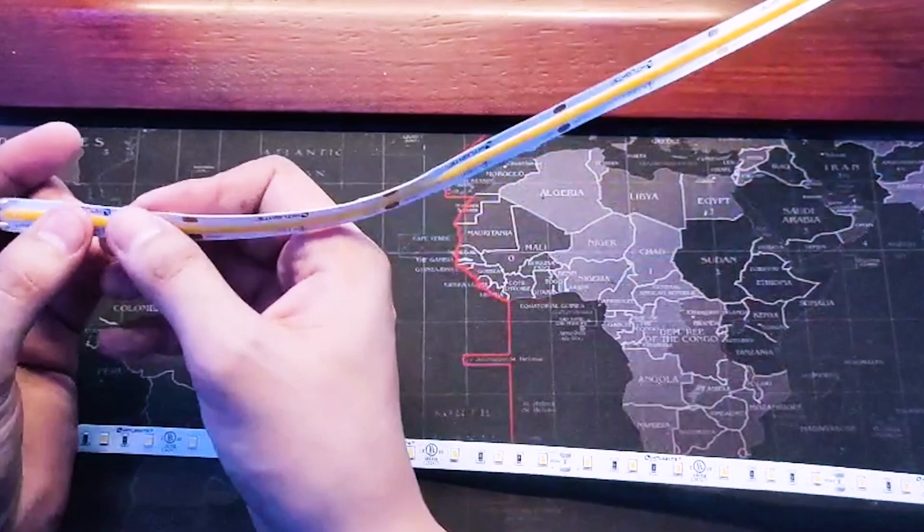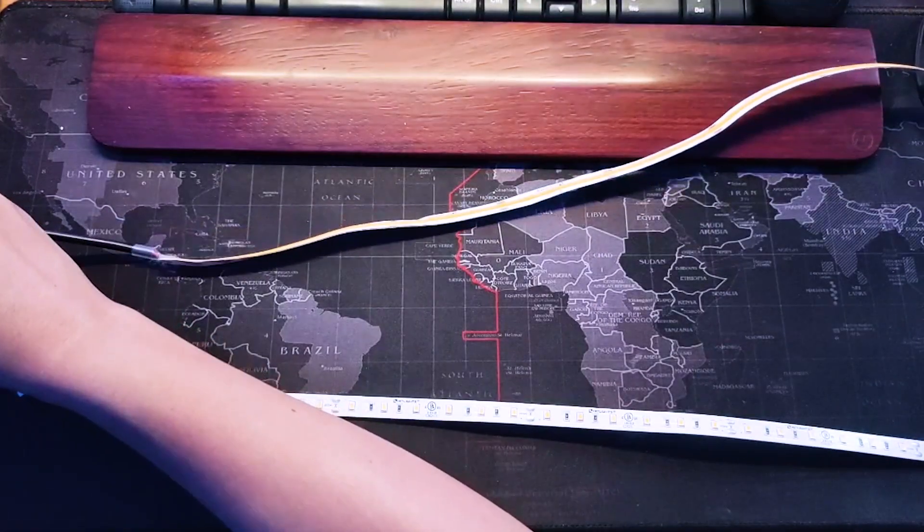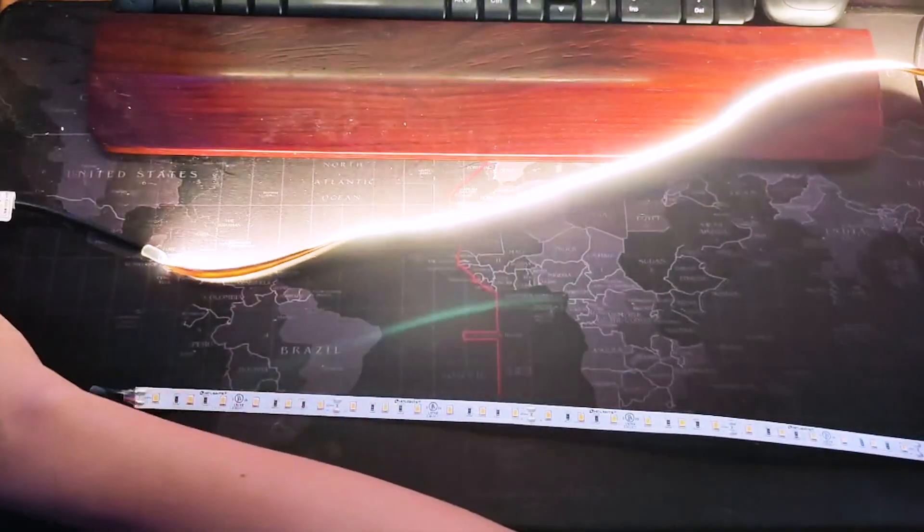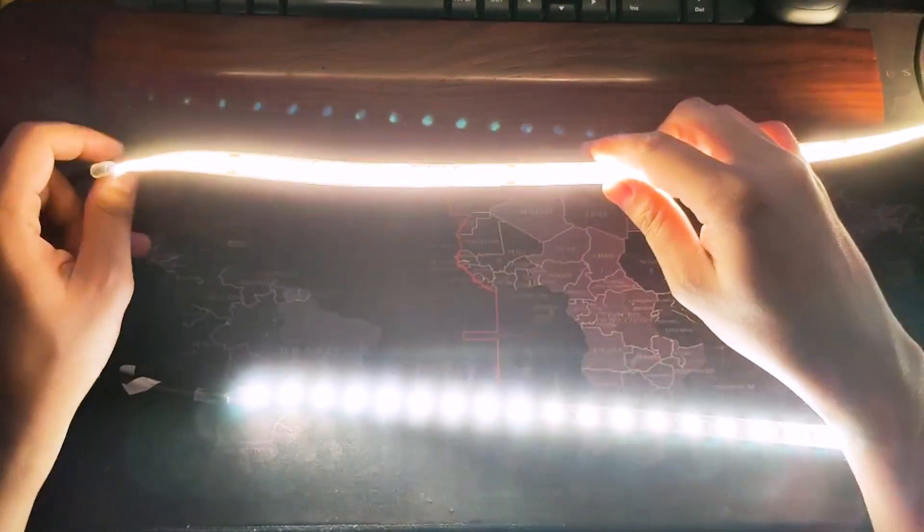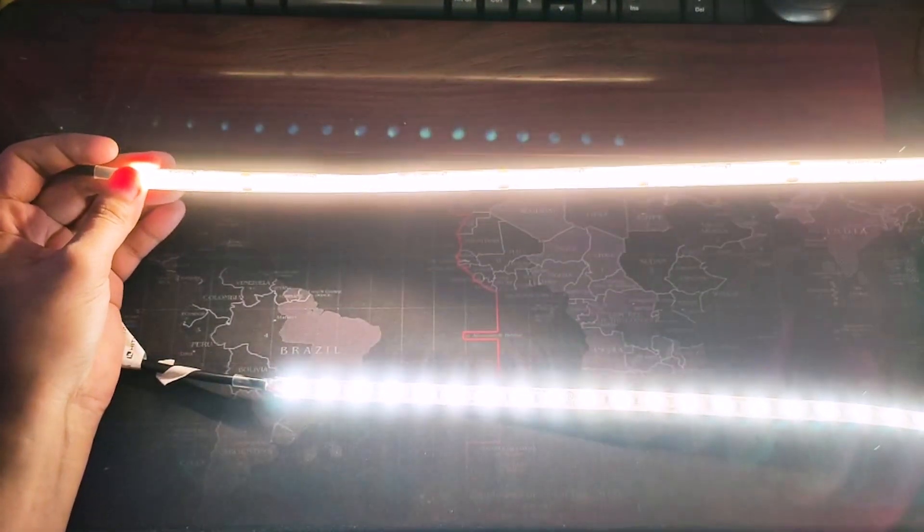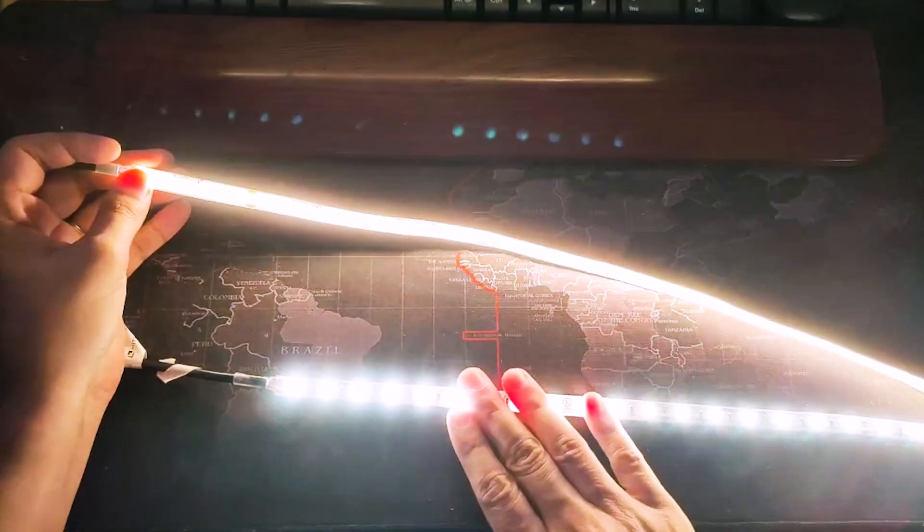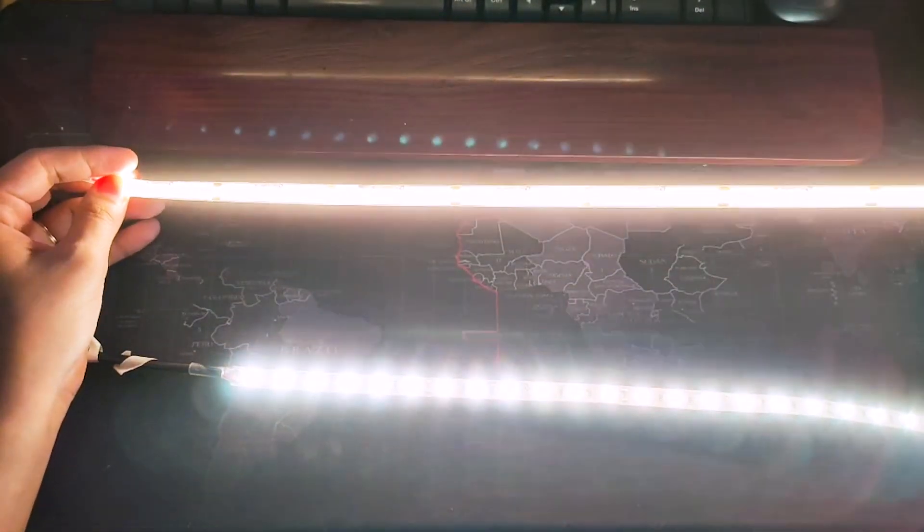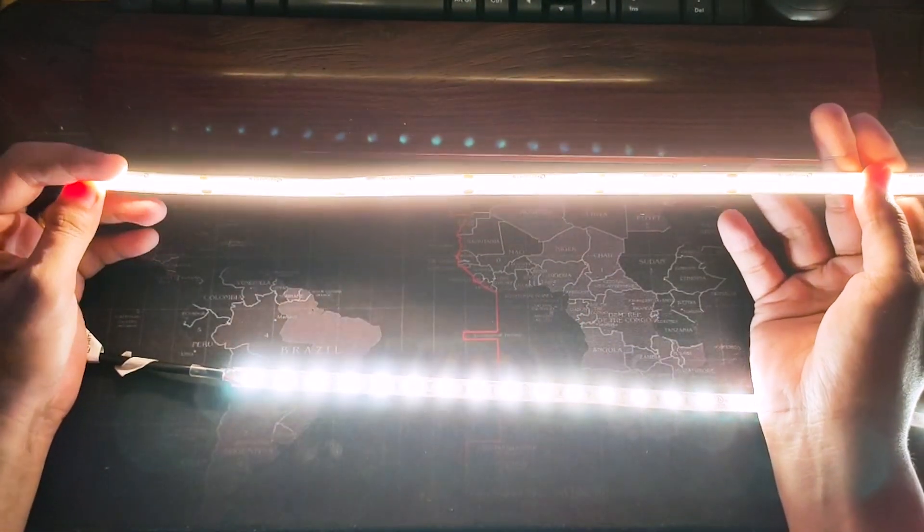So if I power these on, you notice the difference between them. They're fairly bright, so I apologize. COB strips would have one linear light with no gaps in between. The LED strips would have some gaps in between.